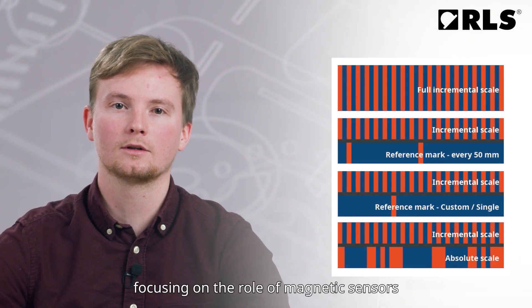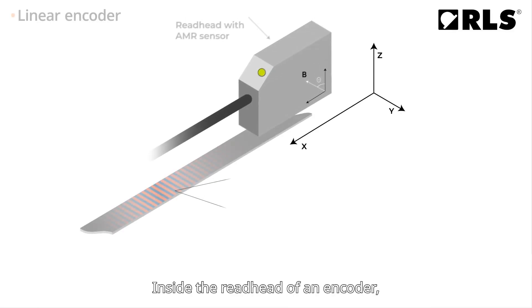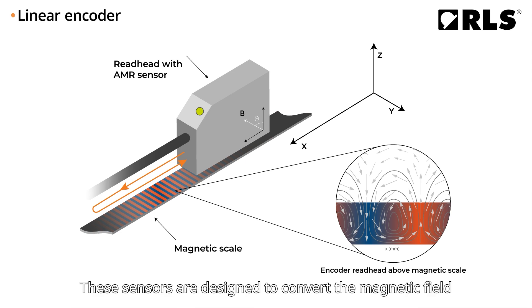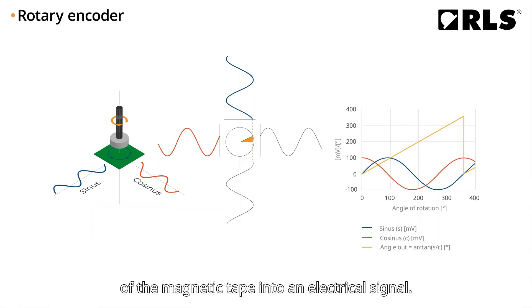Let's take a closer look at the technical aspects of encoder technology, focusing on the role of magnetic sensors in both incremental and absolute encoders. Inside the read head of an encoder, magnetic sensors such as AMR sensors or HAL sensors play a crucial role. These sensors are designed to convert the magnetic field generated by the north-south poles of the magnetic tape into an electrical signal.